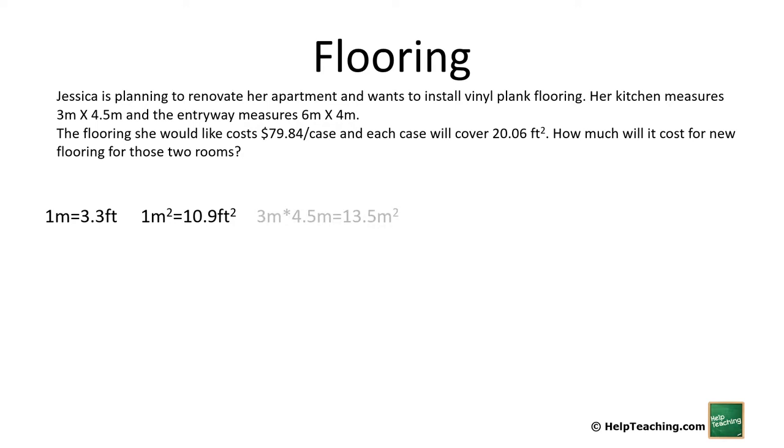So the kitchen measures 3 by 4.5 so it gives us a total of 13.5 square meters. 13.5 square meters times 10.9 square feet per square meter gives us 147.2 square feet.